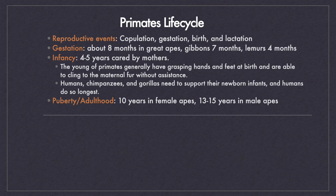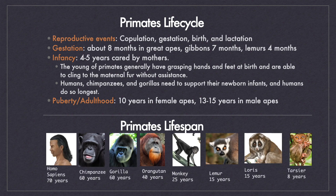The age of puberty is about 10 years in female apes and about 13 to 15 years in males. Homo sapiens live for about 70 years. Chimpanzees and gorillas have a 60-year lifespan. The lifespan of an orangutan is 40 years. Monkeys live for 20 to 25 years. Lemurs and lorises have a short lifespan of about 15 years. Tarsiers have the shortest lifespan and live for about 8 years.